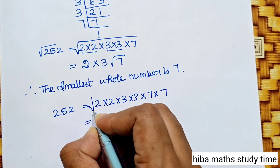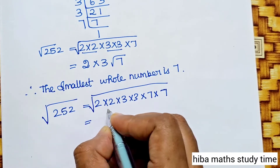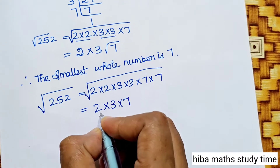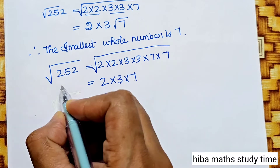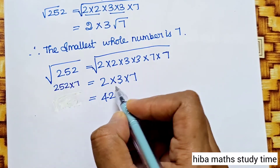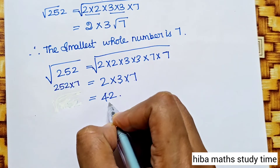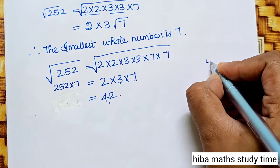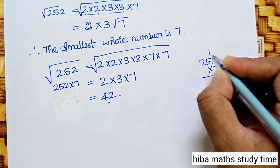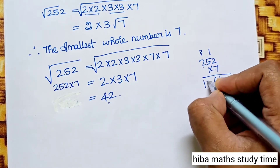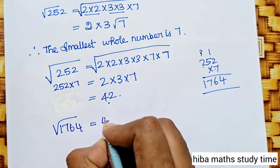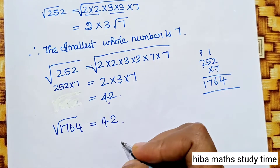Now, 252 × 7 = 1764. We can verify: 252 = 2 × 2 × 3 × 3 × 7, and multiplying by 7 gives 2 × 2 × 3 × 3 × 7 × 7. So the root of 1764 is equal to 42. That is our final answer.